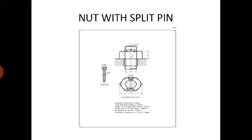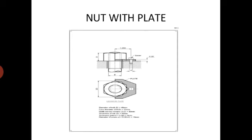Now draw the top view of that assembly. In the top view we will show the hexagonal face, core diameter, and split pin. In our next diagram, I will show a hexagonal nut along with a plate. Plate means when we want to fix a plate by using nut and bolt — what are the arrangements of that nut. In this arrangement, we have to draw a plate, nut and a screw.